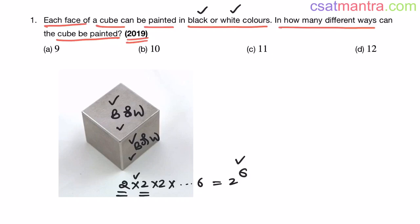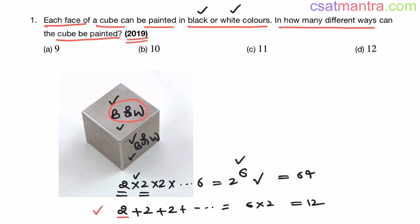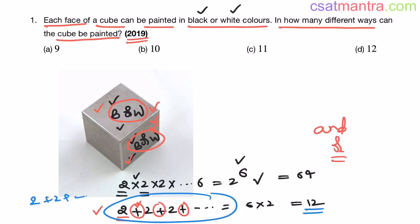But this is not the answer. 2 power 6 is 64. Since 64 is not in the options, you may think the answer is 2 + 2 + 2 for 6 faces, that is 6 × 2 = 12. When you do this, your logic is: this face can be black or white — so you add 2. But you cannot use OR when moving from one face to another face.